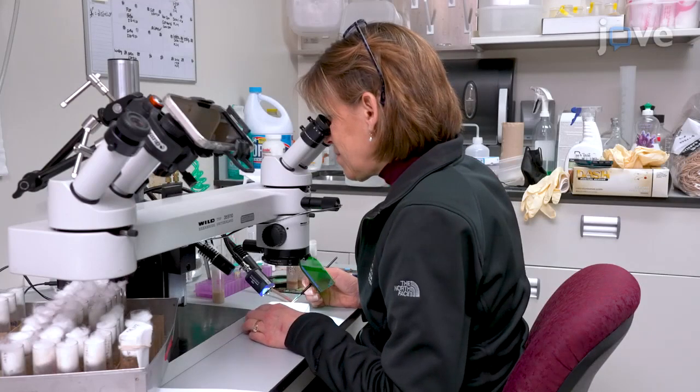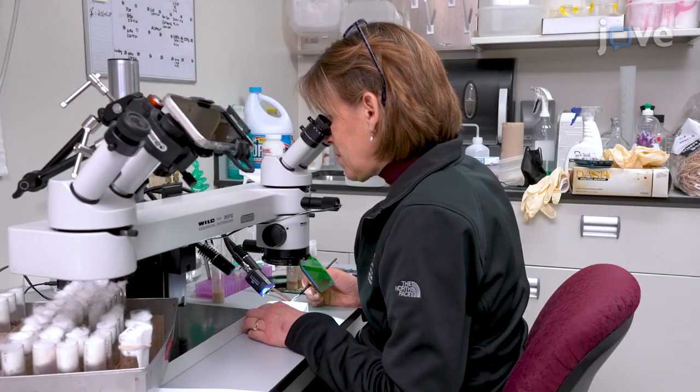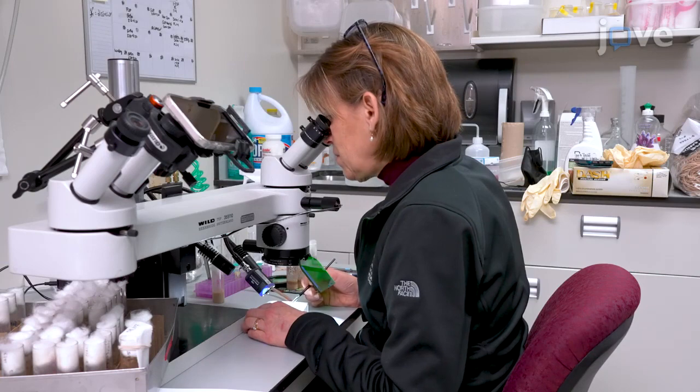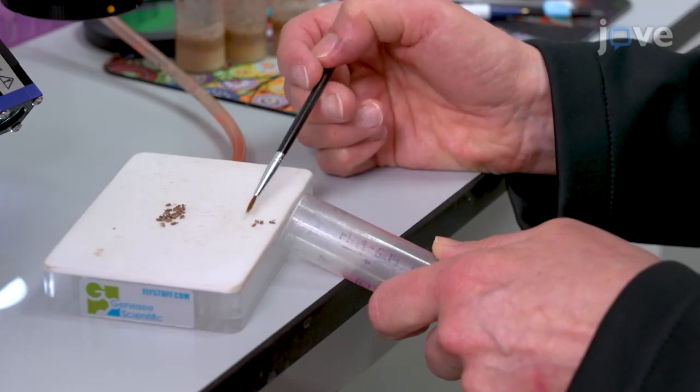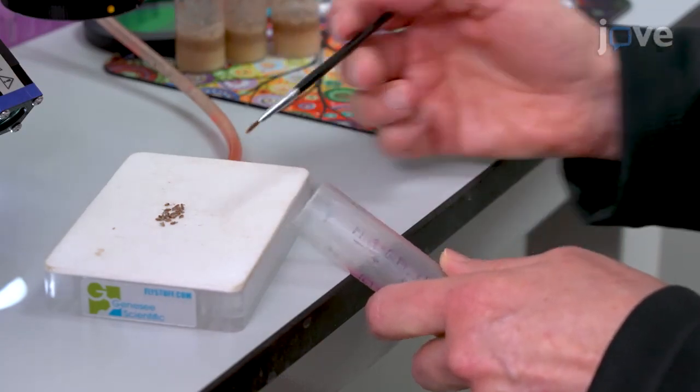After anesthetizing the flies on a carbon dioxide pad, sort newly eclosed F1 young male flies within 6 hours of eclosion and place them in clean vials containing food with 40 or fewer flies per vial.